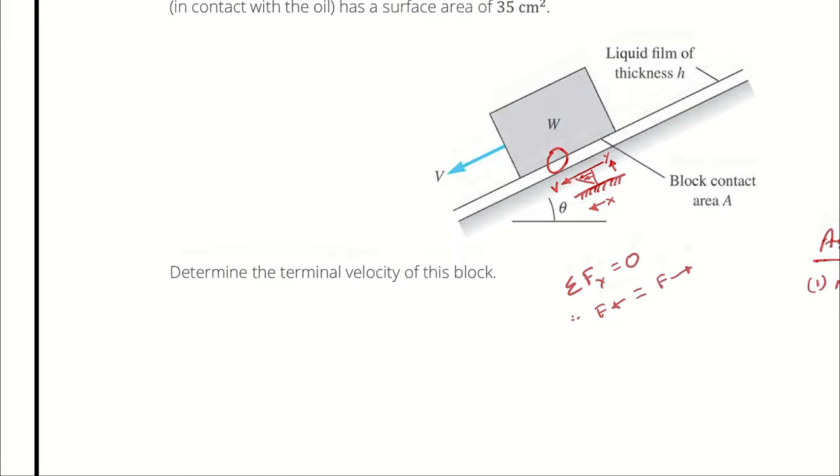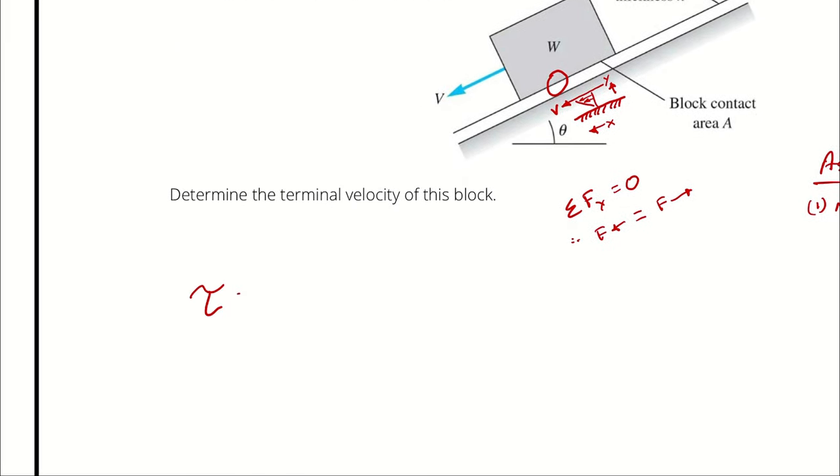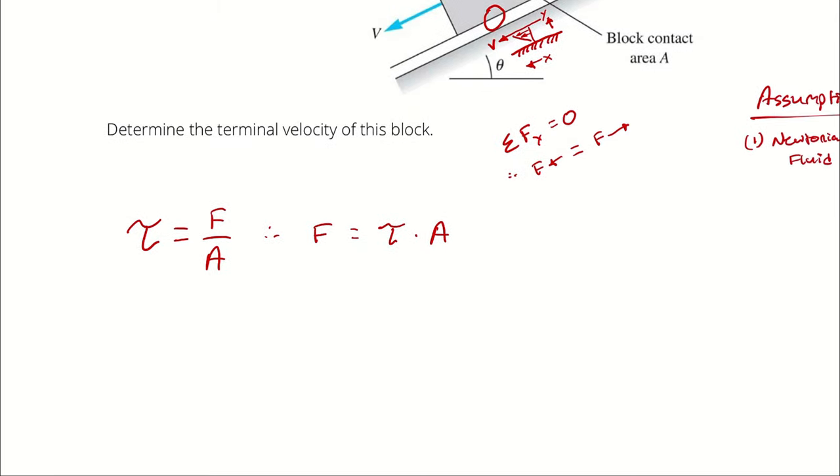Like earlier, the shear stress is going to be the drag force divided by the area of effect here. Therefore, the force is going to be the shear stress multiplied by the area of effect. Then, if we're assuming a Newtonian fluid, this is going to be dynamic viscosity multiplied by the derivative of u with respect to y times area.